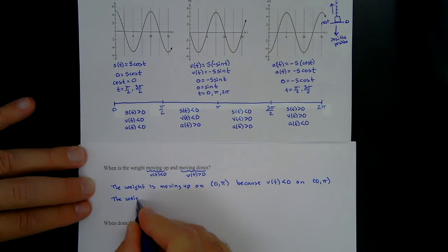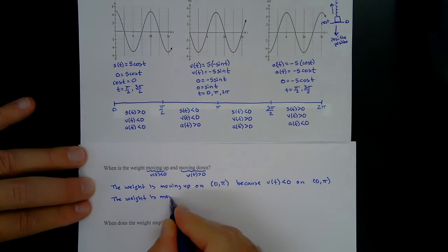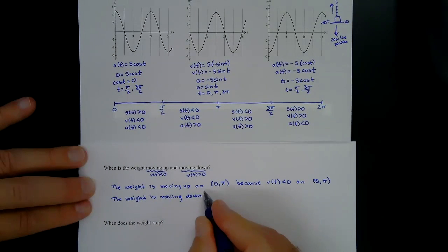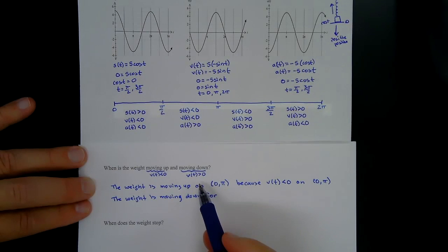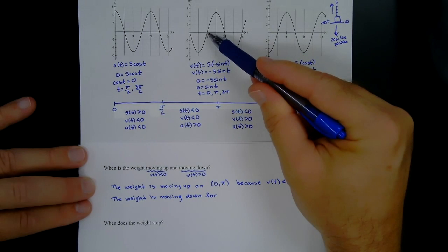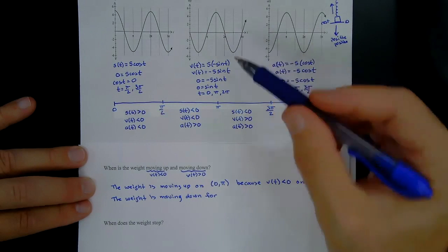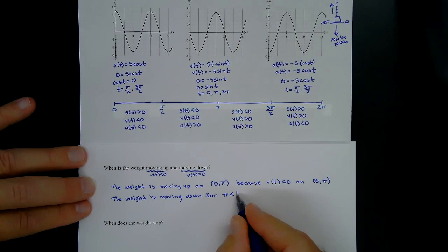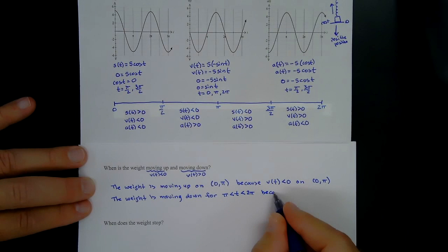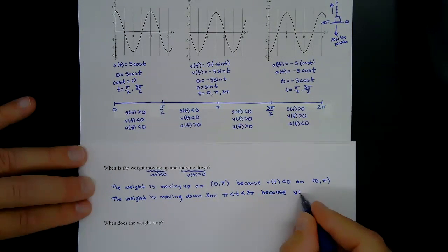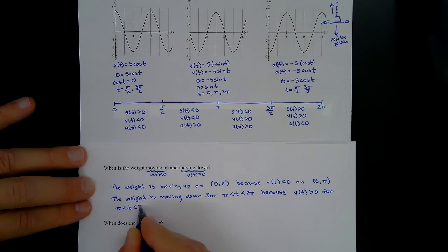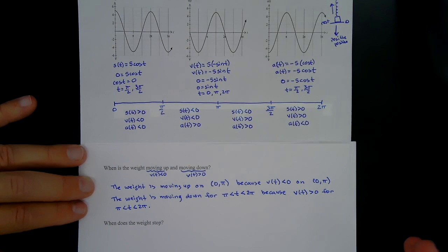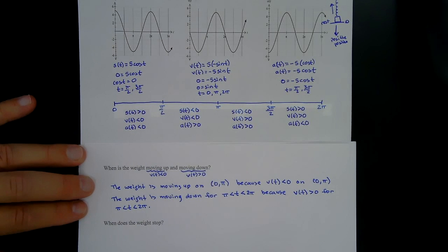The weight is moving down for π < t < 2π, because v(t) > 0 on that interval. You can write this in interval notation or inequality notation — either is fine. The key is that positive velocity means moving down in our setup.